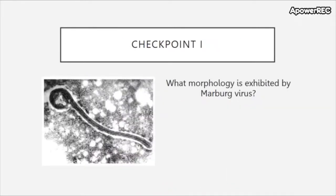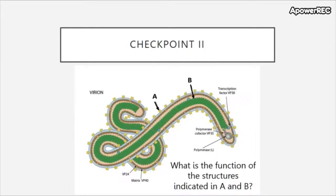Checkpoint one: what morphology is exhibited? And checkpoint two: what is the function of the structures indicated in A and B? A is pointing at the small tan or yellow things studded around the virus, and B is pointing at the green subunits inside.